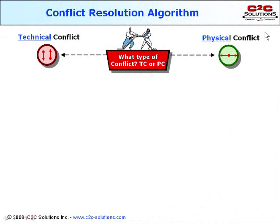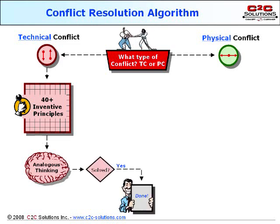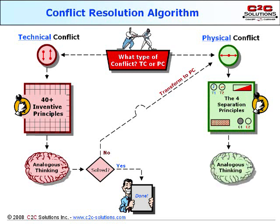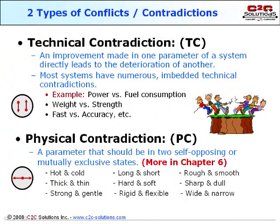As you learned earlier, there are two types of contradictions: technical and physical. This flowchart shows two paths to take depending on what type of conflict you have. Later in this chapter, you'll learn how to transform technical contradictions into physical and vice versa, so you can have a broader set of tools to address the problem. Right now, we'll focus our discussions on physical contradictions and tools to address them. Unlike technical contradictions that have two parameters fighting, a physical contradiction has one parameter, characteristic or function that you want in two opposite states.